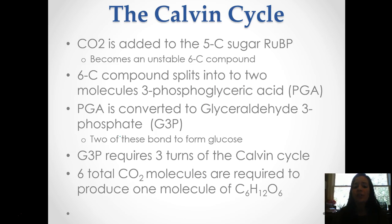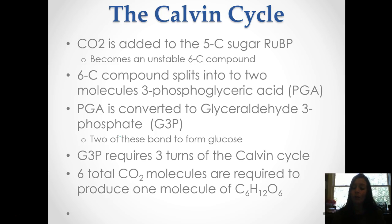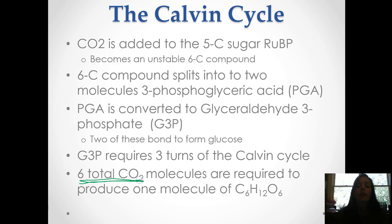CO2 is added to a 5-carbon sugar called RuBP. This becomes unstable because now it's a 6-carbon compound, and it doesn't like to exist that way. So it splits into two molecules of something called PGA. That is ultimately converted to form glucose — two of them bond to form glucose. It requires three turns of the Calvin cycle, so it's not just a one-time around. And it's also important to note that there are six total CO2 molecules required to produce just one molecule of C6H12O6, or glucose.